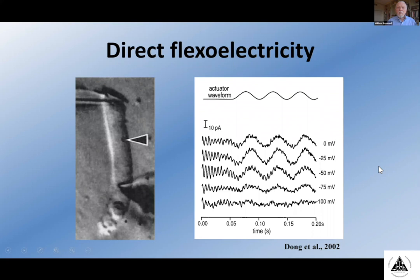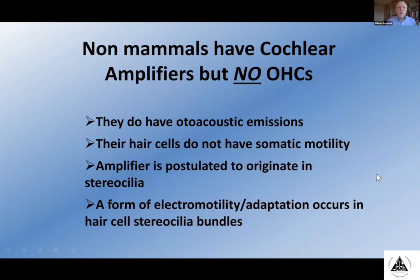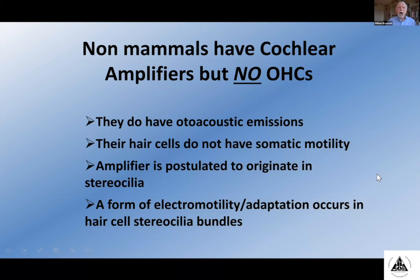We think what is happening involves flexoelectricity — when voltage changes, you get a change in the bending modulus, which causes the object to bend, analogous to piezoelectricity. Iwasa's lab showed that if you cause elongation, you get currents flowing in response to elongation and shortening of the outer hair cell. Non-mammals that have cochlear amplifiers but no outer hair cells do have otoacoustic emissions — their hair cells don't have somatic motility, but the amplifier is postulated to originate in the stereocilia via a form of electromotility adaptation in stereocilia bundles. We modeled that as a flexoelectric process. Rick's analysis predicted the stereocilia length change from the base with short stereocilia to the apex with long stereocilia via a power efficiency analysis. We pulled membrane tethers using optical tweezers and drove them with electrical stimuli, showing they create force up to high frequencies, that they are also present in HEK cell stereocilia, and that salicylate also attenuates the response.